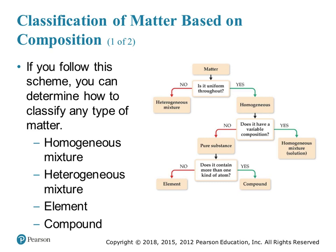If it's homogeneous, you then have to ask yourself: does it have a variable composition? If the answer is no, it does not have a variable composition — that means it's a pure substance, so it's either an element or a compound. An element being one type of atom, and a compound being two or more different atoms chemically combined. If it does have a variable composition, then it is a homogeneous mixture and is classified as a solution. All solutions are considered homogeneous.